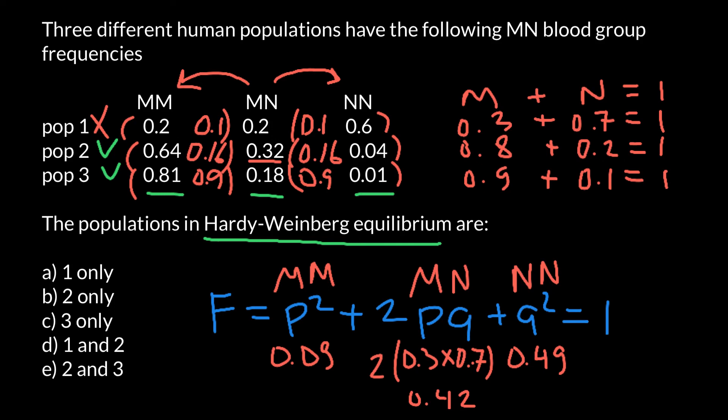As you can see, the correct answer is answer E: the 2nd and 3rd populations are in Hardy-Weinberg equilibrium. That's all for today. Thank you for your attention. Please subscribe for my new videos, give a thumbs up if you liked this video, write your comments and questions, share this video with your classmates, and see you in the next video. Goodbye.